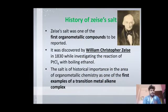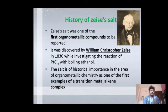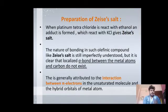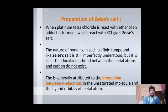The history of Zeise's salt is very interesting. The scientist William Christopher Zeise was working on the well-known square planar complex tetrachloroplatinate, but he accidentally invented Zeise's salt. Although it was an accident, it is now very important in inorganic chemistry. For preparation, if we react tetrachloroplatinate with ethanol it forms an adduct, and when that adduct reacts with KCl it forms Zeise's salt. One thing is confirmed: there is no sigma bonding between the metal and the ligand.